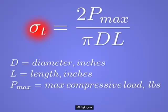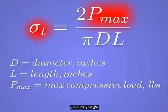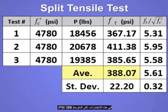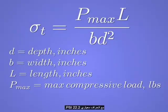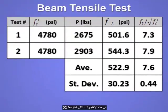Calculate the tensile strength for the maximum compressive load reached during the split tensile test. For these tests, the average was 388 PSI with a standard deviation of 22.2 PSI. Calculate the tensile strength for the maximum compressive load reached during the beam tensile test. For these tests, the average was 522.9 PSI.